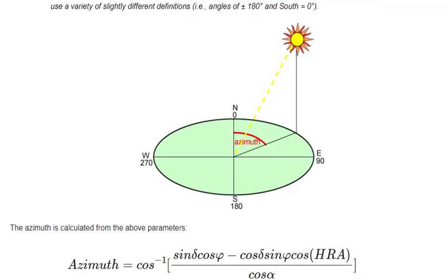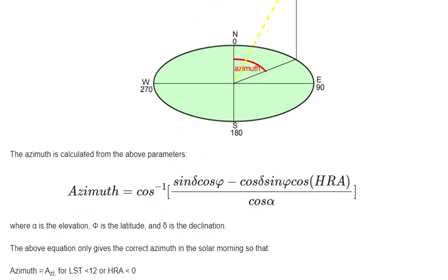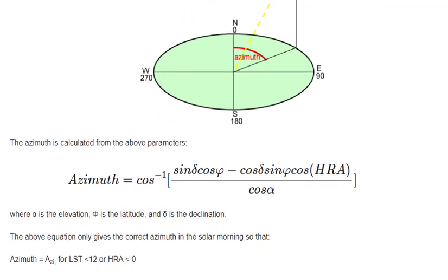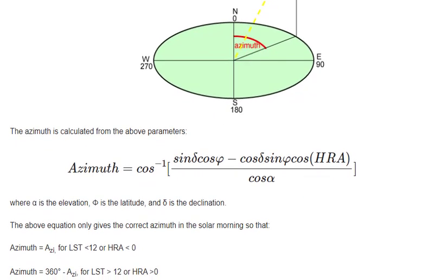The azimuth is calculated from the above parameters, where alpha is the elevation, phi is the latitude, and delta is the declination. The above equation only gives the correct azimuth in the solar morning.